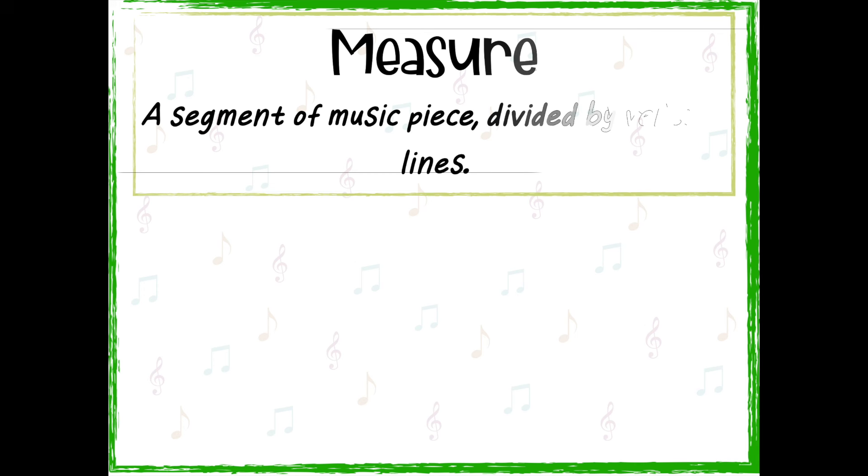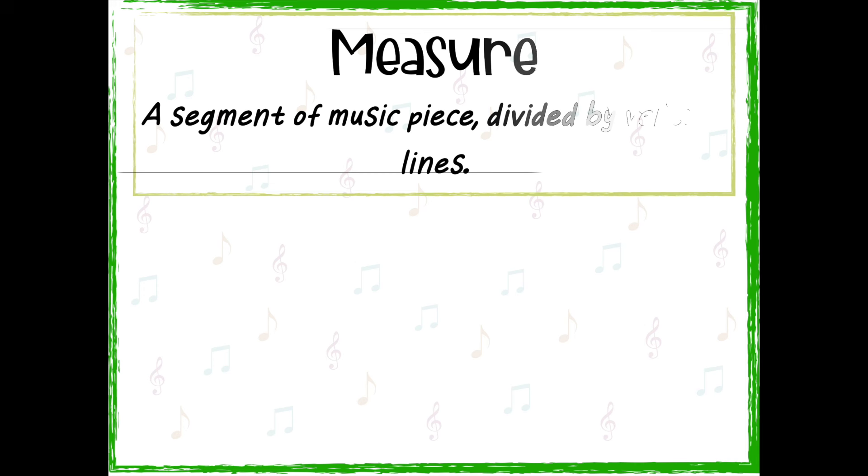A measure or a bar is a small segment of a piece of music that is divided by vertical lines. Measure represents a very short musical idea or a motive. Think of it as a word in a story. It's a very small element that can have some sort of meaning on its own, but it gets more interesting as we add more context to it.